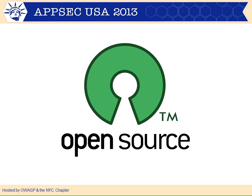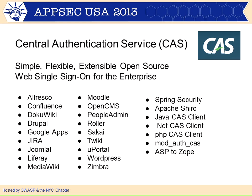Who here has open source deployed in their enterprise or works with open source software? Just about everybody, right? How do we know open source is secure? That's really the theme of this presentation. So we're going to talk about how we applied OWASP to an open source project called CAS. This is a web single sign-on system — simple, flexible, extensible open source web single sign-on for the enterprise.